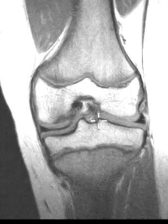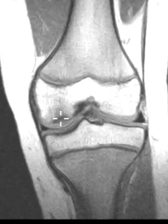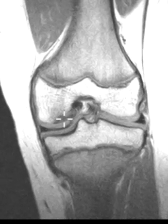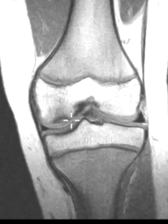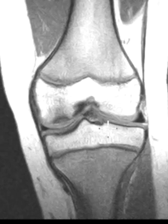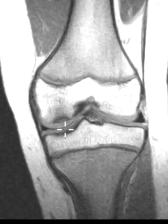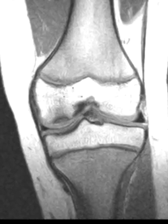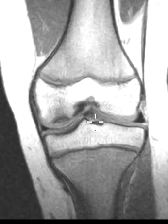We call this an osteochondral defect because it involves both. The worry is that these things can grow, the bone can fracture, or this whole piece can break off and float around in the knee joint. When we catch it early like this, you don't want that to happen, so the surgeon may follow the patient on MRIs or go in there and drill it, hoping that blood will flow into it and it can heal itself.